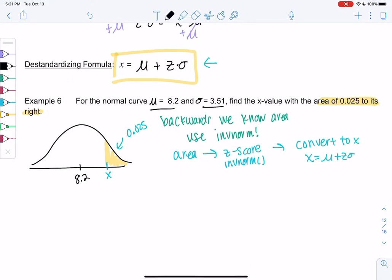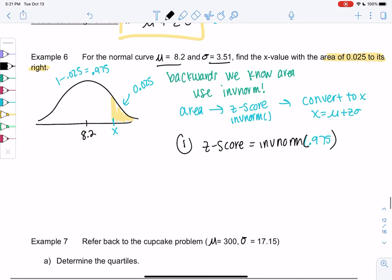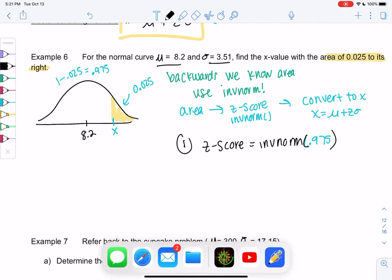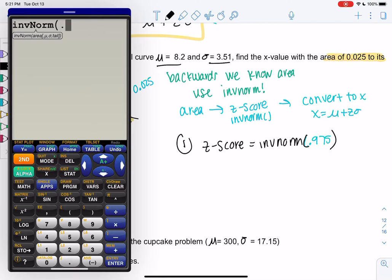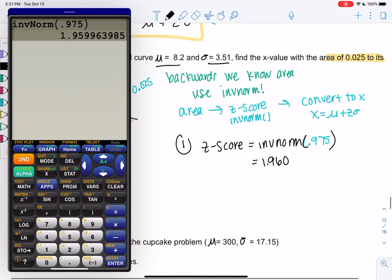Let's go ahead and find the z-score. We use inverse norm area to the left. So we have area to the right, so we'll do 1 minus 0.025. We should get 0.975. So inverse norm of 0.975. Second distribution, inverse norm, 0.975. And we get a z-score of 1.960. This is a z-score. This is not a data value. So now we de-standardize.